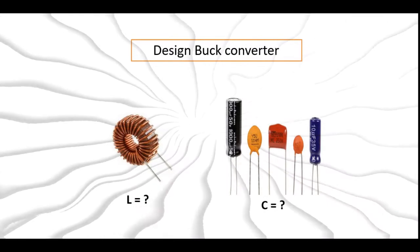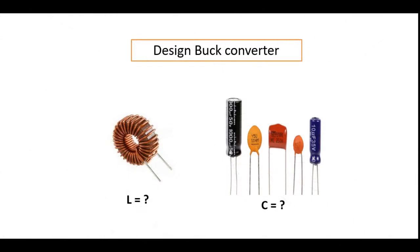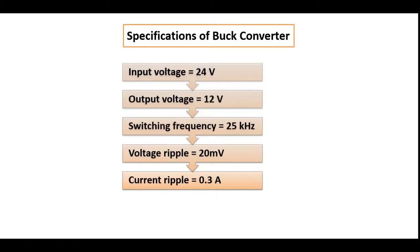Now we will try to design a simple buck converter, and the design is based on filter inductance and capacitor. Before proceeding further, we shall look at the specifications required: input voltage equals 24 V, required output voltage equals 12 V, switching frequency equals 25 kHz, maximum voltage ripple equals 20 millivolts, and inductance current ripple equals 0.3 A.